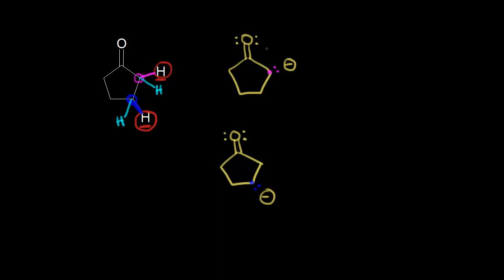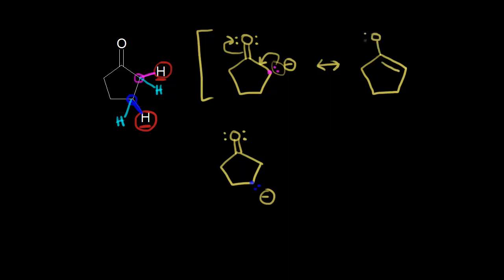The top conjugate base is stabilized by resonance. You could take these electrons in magenta and move them in to form a double bond. The electrons in magenta move in here, and that would kick these electrons off onto the oxygen. So when we draw our ring, we'd have a double bond here, and this oxygen would have three lone pairs of electrons around it, giving it a negative one formal charge. The electrons in light blue moved off onto the oxygen. Now remember, oxygen is more electronegative than carbon, so this oxygen is better able to bear this negative charge than this carbon in magenta. So this resonance structure on the right actually contributes more to the overall hybrid. But our conjugate base is stabilized by resonance.